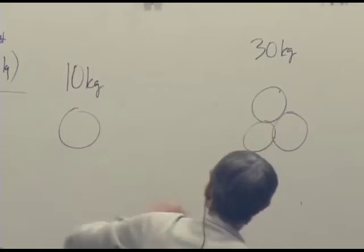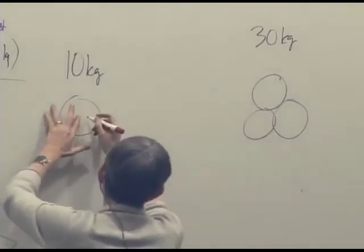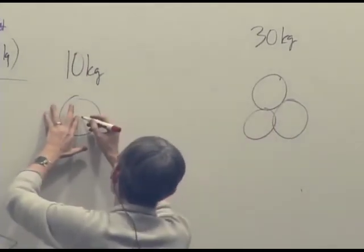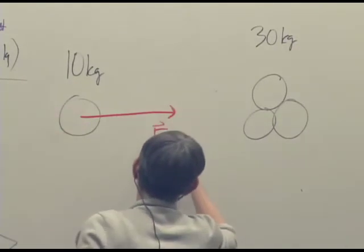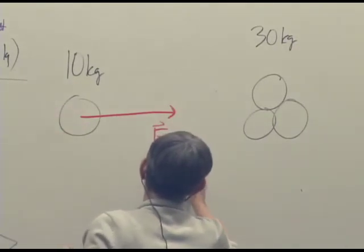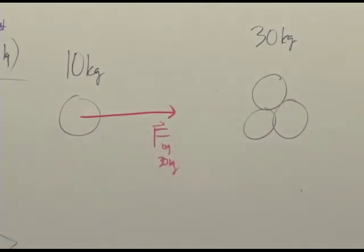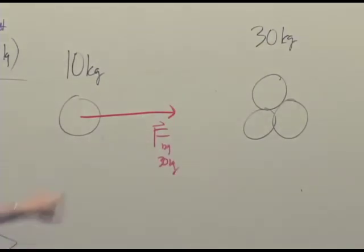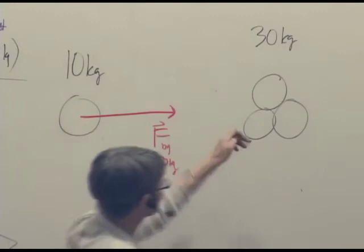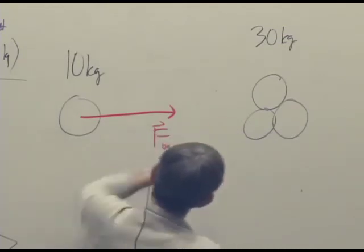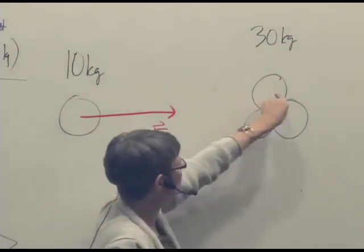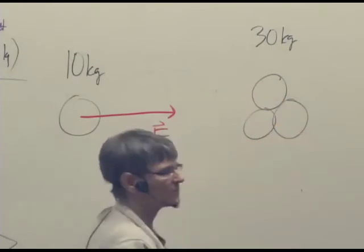So here's this 30 kilogram thing. So it pulls on this with a force that's that big. So that's the force due to that. How does he get that big? Well, it's the sum of the force exerted by this piece and that piece and that piece.